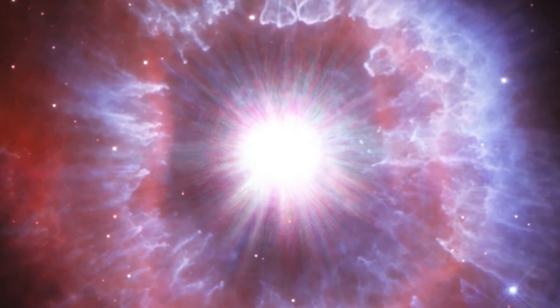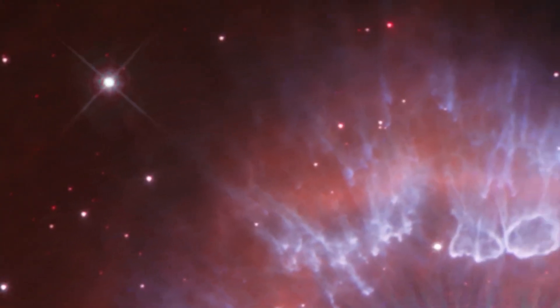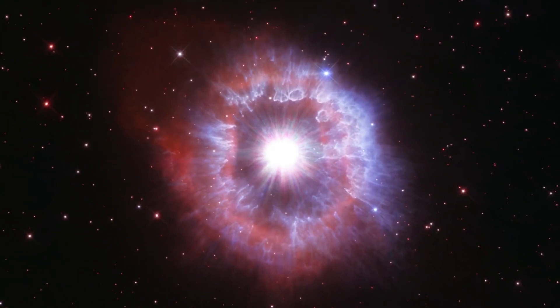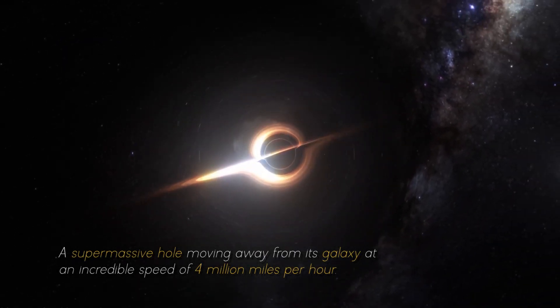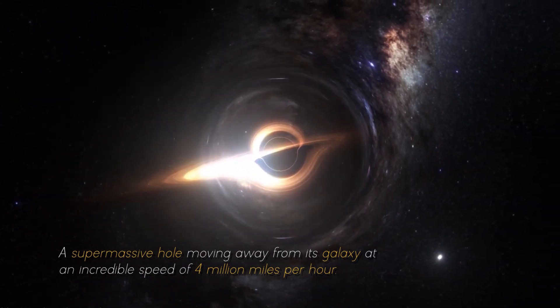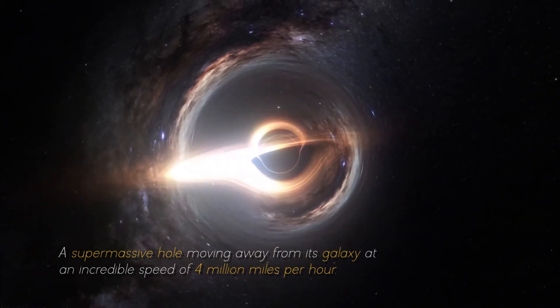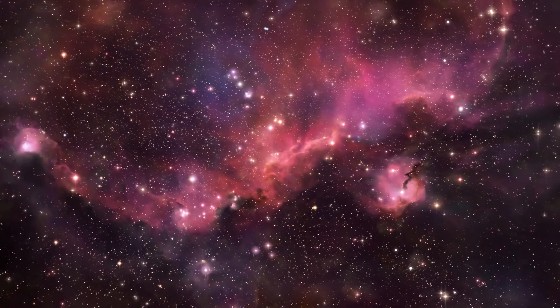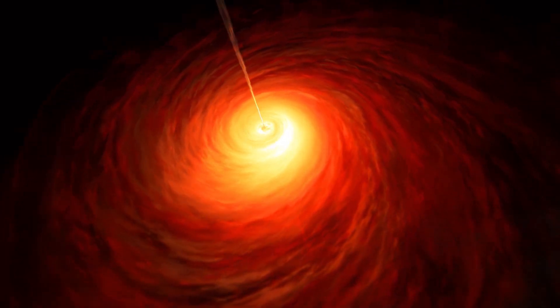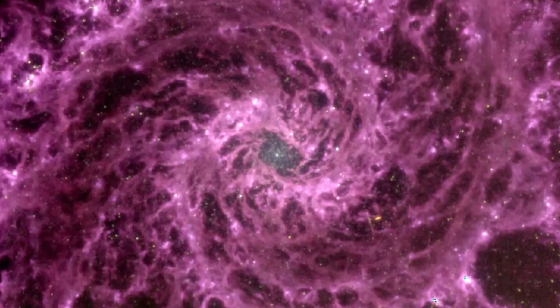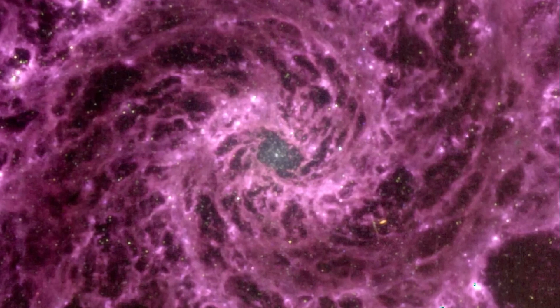A few weeks ago, the telescope discovered the earliest known galaxy in the universe, but it now has detected something even more massive: a supermassive black hole moving away from its galaxy at an incredible speed of 4 million miles per hour. This latest discovery has very important implications and has generated much speculation among scientists and space enthusiasts about what it means for our understanding of the cosmos.